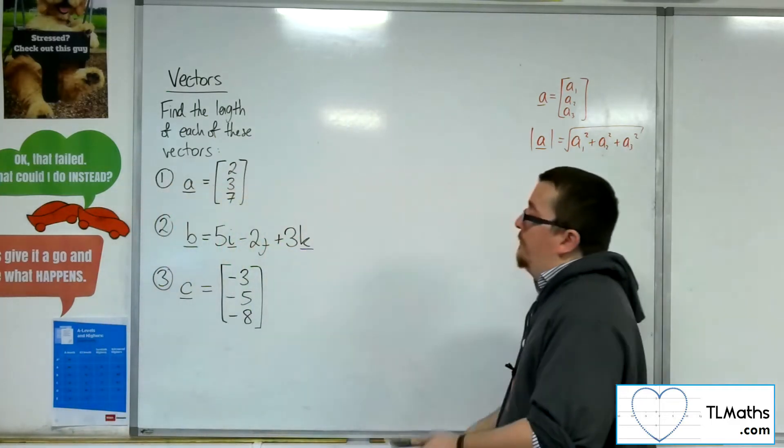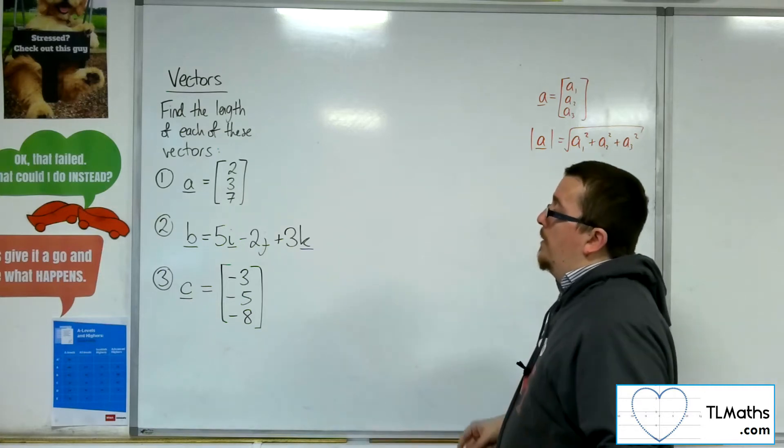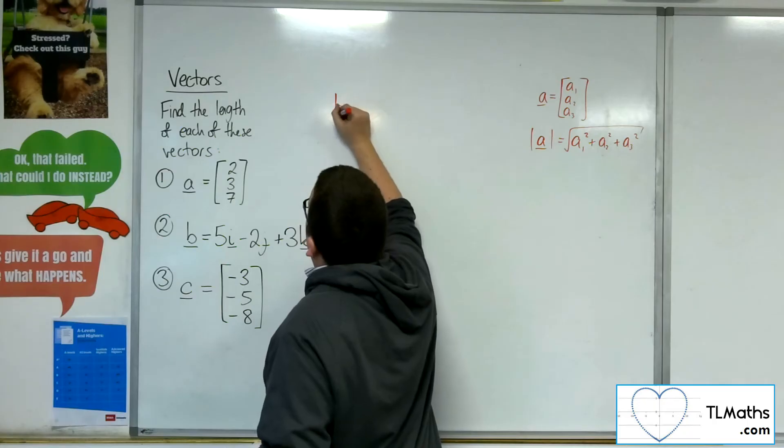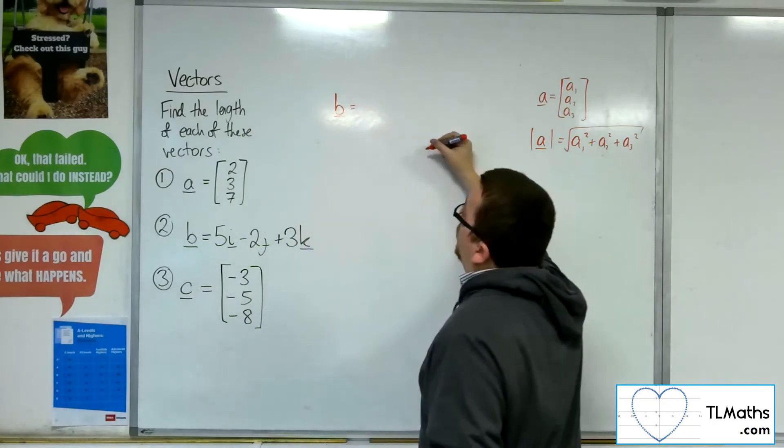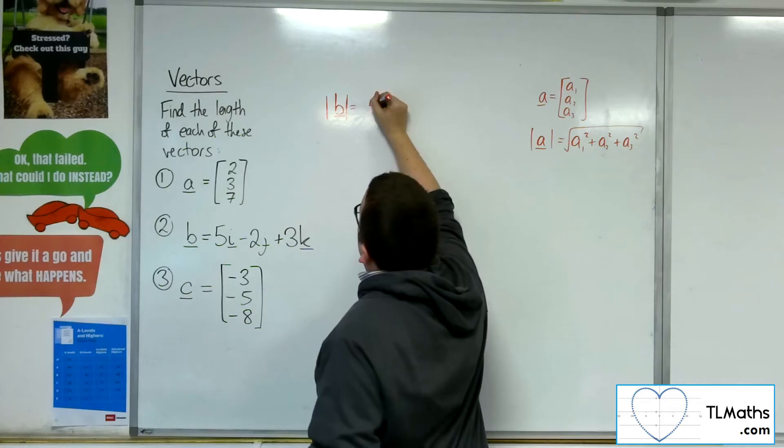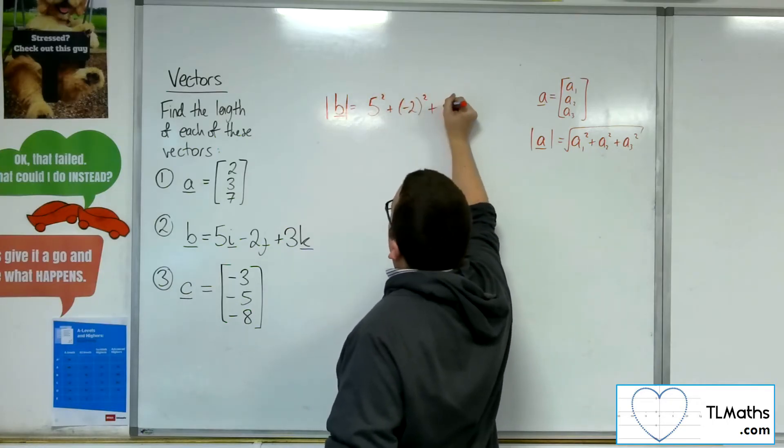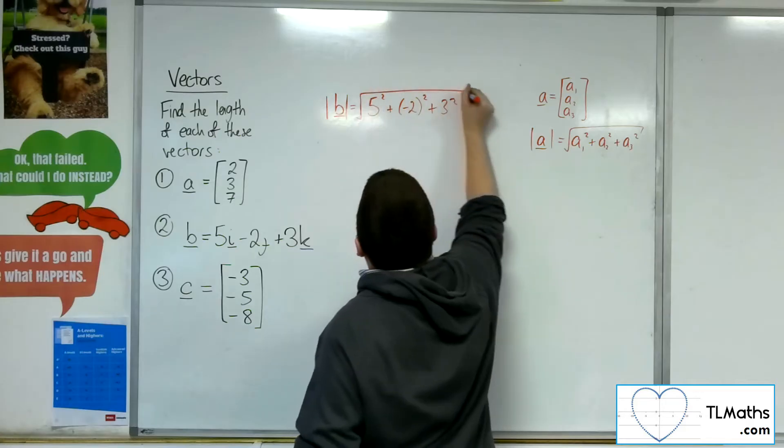As for number 2, B equals 5I minus 2J plus 3K. So, it's just written in component form now, rather than column vector form. So, we've got 5 squared plus minus 2 squared plus 3 squared square rooted.